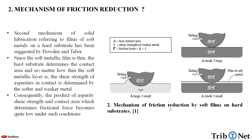Here in the figure, we can see the mechanism of friction reduction by soft films on hard substrates, where A is the true contact area and Tau is the shear strength of the weaker metal. Friction force is given by the product of area and shear strength. In the first case, there is contact between hard and hard where sliding is happening: A is very small and Tau, the shear strength, is larger. In the hard and soft contact, area is larger and shear strength is small. In the hard-and-hard contact with a coating, we can see that area is smaller and Tau is small as well.